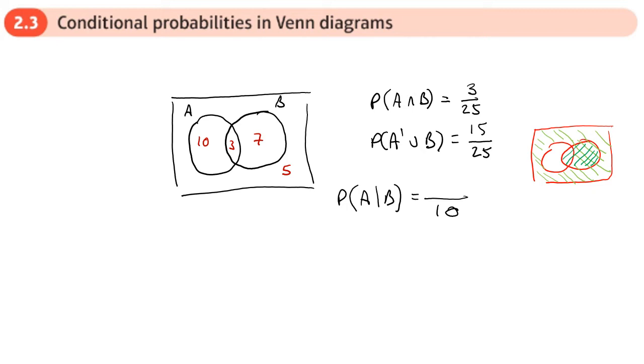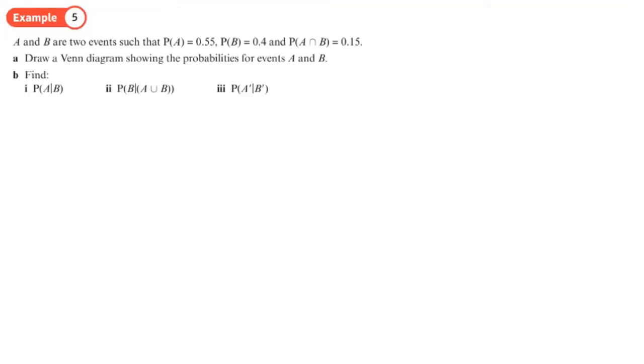Well, 3. So that'd be 3 out of 10. So the B actually gives you the denominator, and the bit where they sort of overlap gives you the numerator.